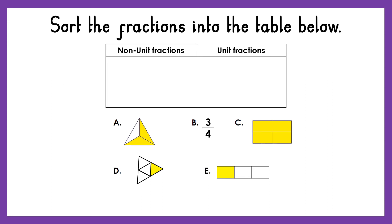How did you do? Let's have a look at A. A is showing us that two parts are shaded out of three parts altogether, so our fraction here is two thirds. Two thirds is a non-unit fraction. In B, three quarters is also a non-unit fraction because the numerator is greater than one, so three quarters goes in the non-unit fractions. C is showing us that four parts are shaded out of four parts altogether — this fraction is showing us four quarters. Four quarters is a non-unit fraction.